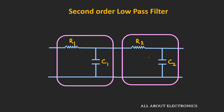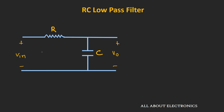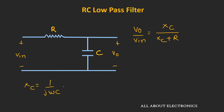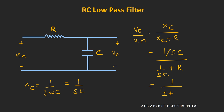In earlier videos on the RC low pass filter, we saw that by cascading two first order low pass filters we can get a second order low pass filter. For the first order filter, the output by input is Xc divided by Xc plus R, where Xc is 1 divided by jωC. If we represent jω in the s-plane (jω = s), then Xc becomes 1/sC. So we can write this expression as 1/sC divided by (1/sC + R), which simplifies to 1 divided by (1 + RCs).